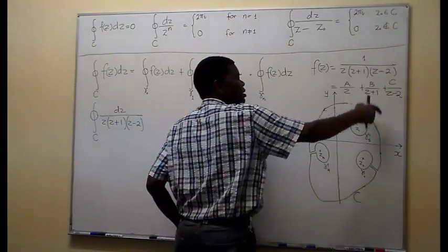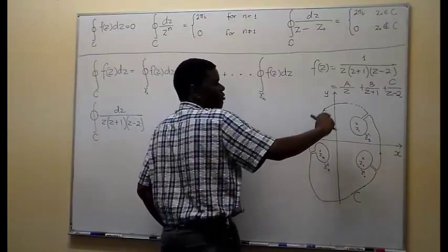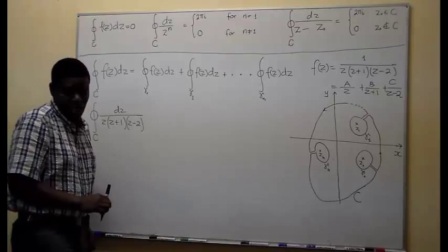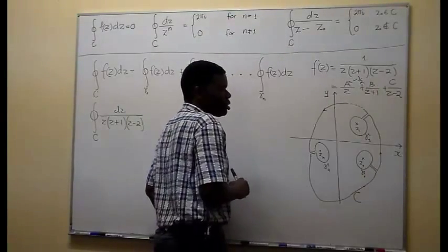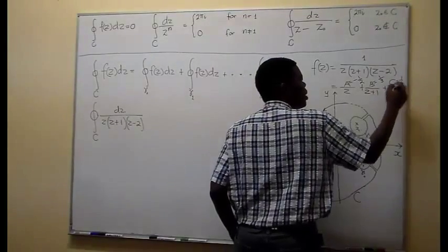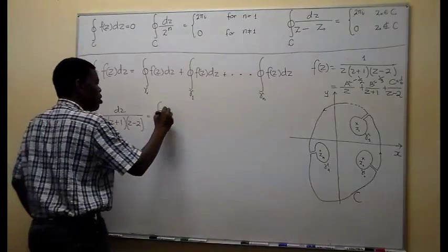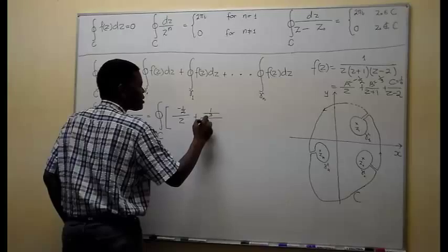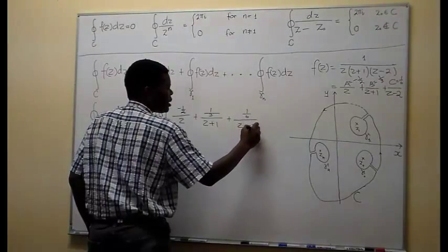We know that the integral of this expression is equal to the sum of the integrals of the individual terms. I've already determined that A = −1/2, B = 1/3, and C = 1/6. Having that, we can expand the integral and write it as the integral over C of [−(1/2)/z + (1/3)/(z + 1) + (1/6)/(z − 2)] dz.